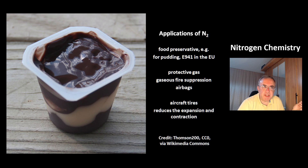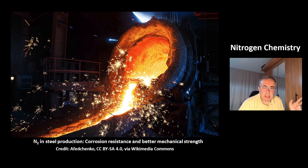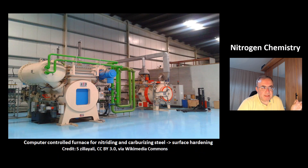These are the applications of nitrogen. It is used as a food preservative — for example, for pudding — and in the European Union it has the label E-941. It is also used as a protective gas, as a gaseous fire suppression agent, for airbags, and for aircraft tires. Nitrogen reduces the expansion and contraction of tires. Nitrogen is also used in steel production — it gives steel corrosion resistance and better mechanical strength. This is a computer-controlled furnace for nitriding and carburizing steel, which is a method to harden the surface of steel.